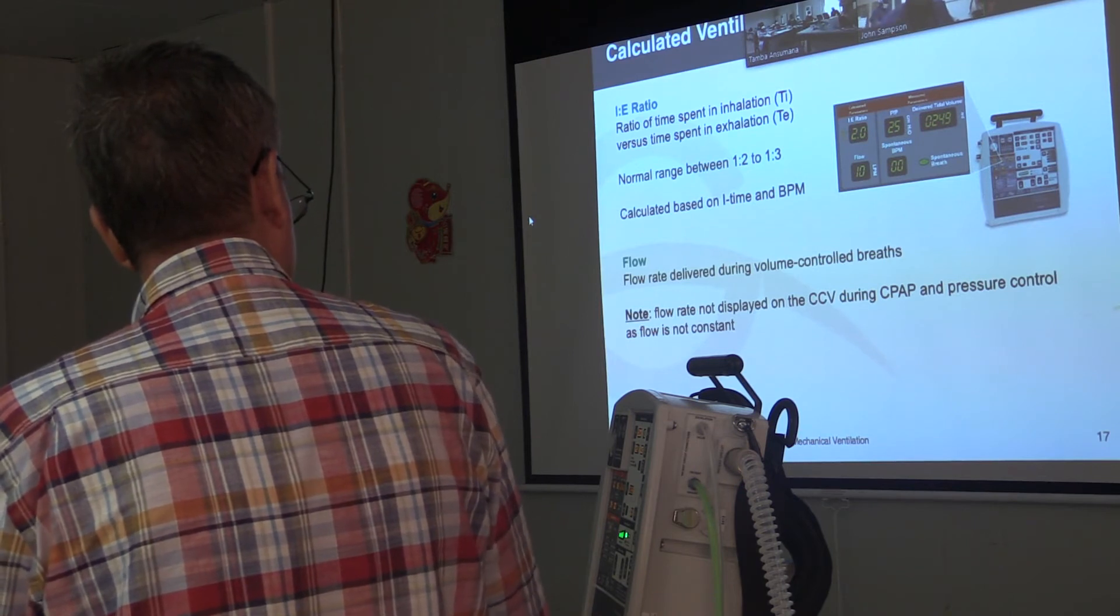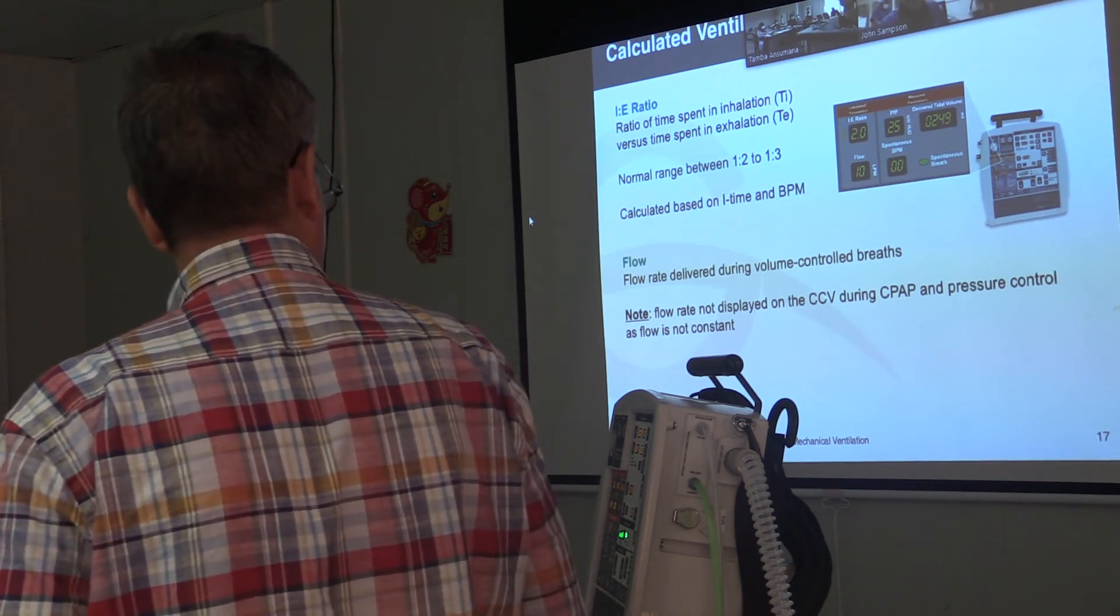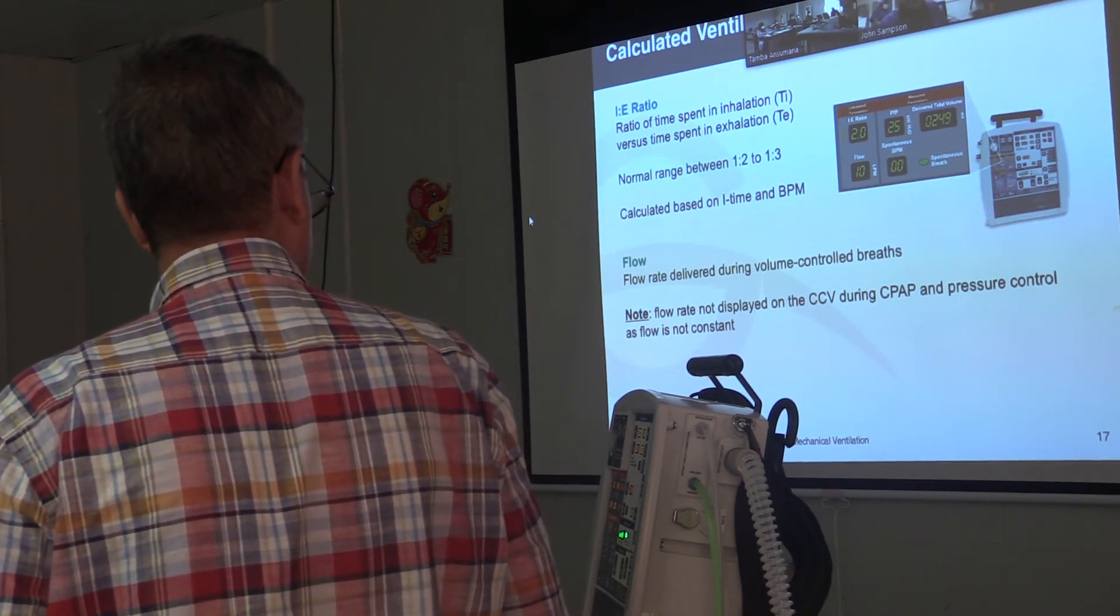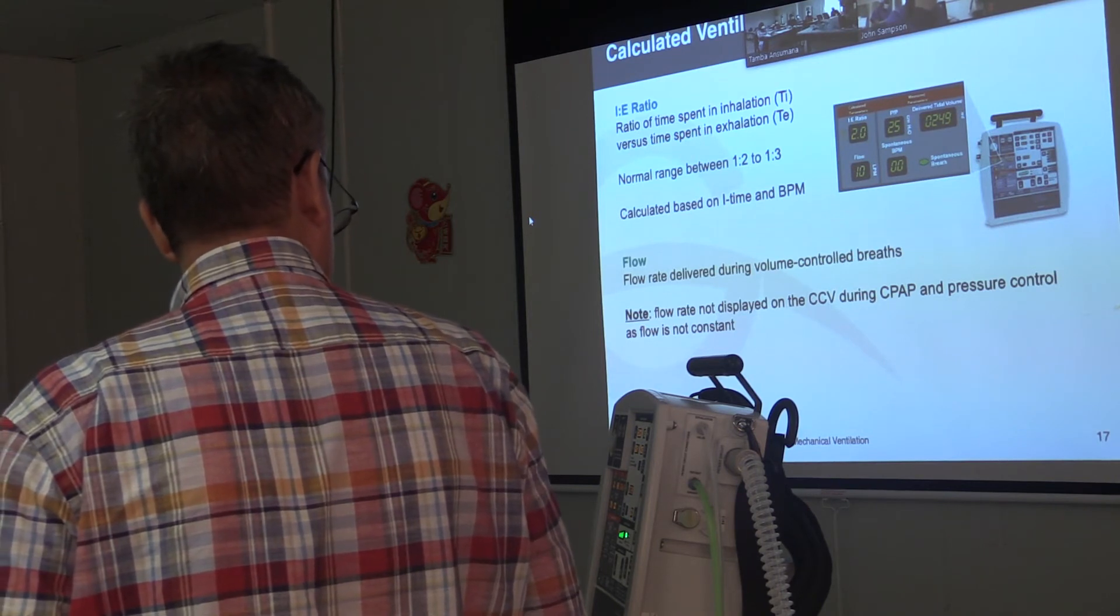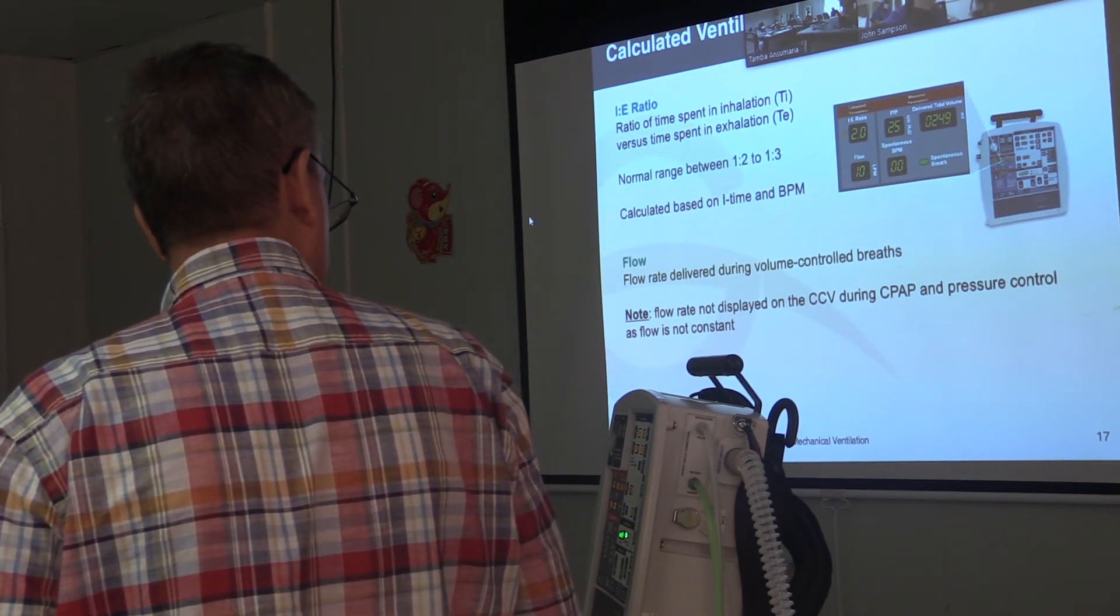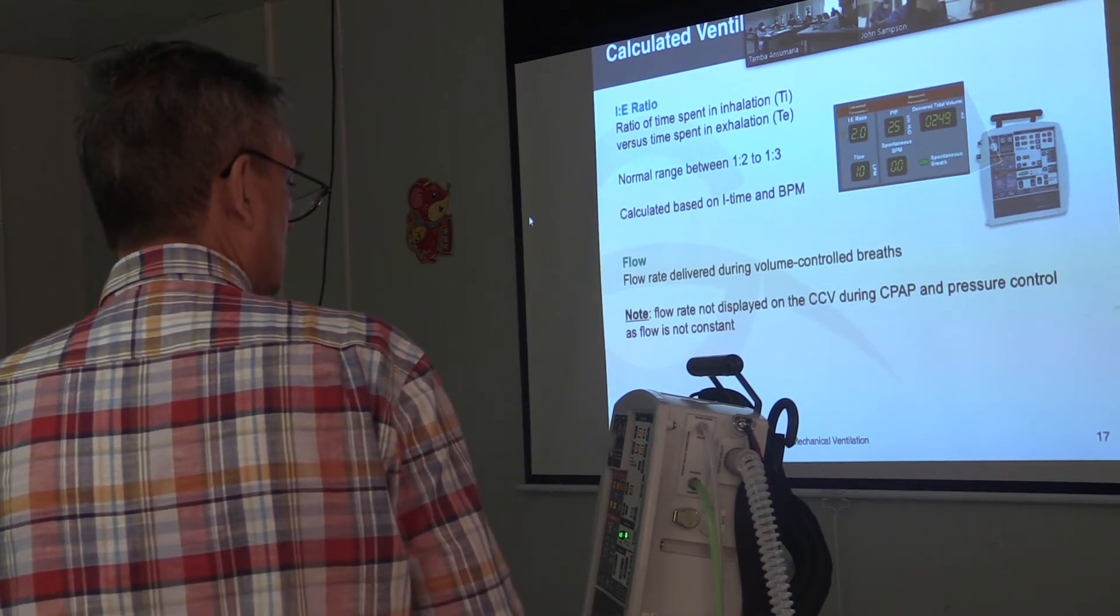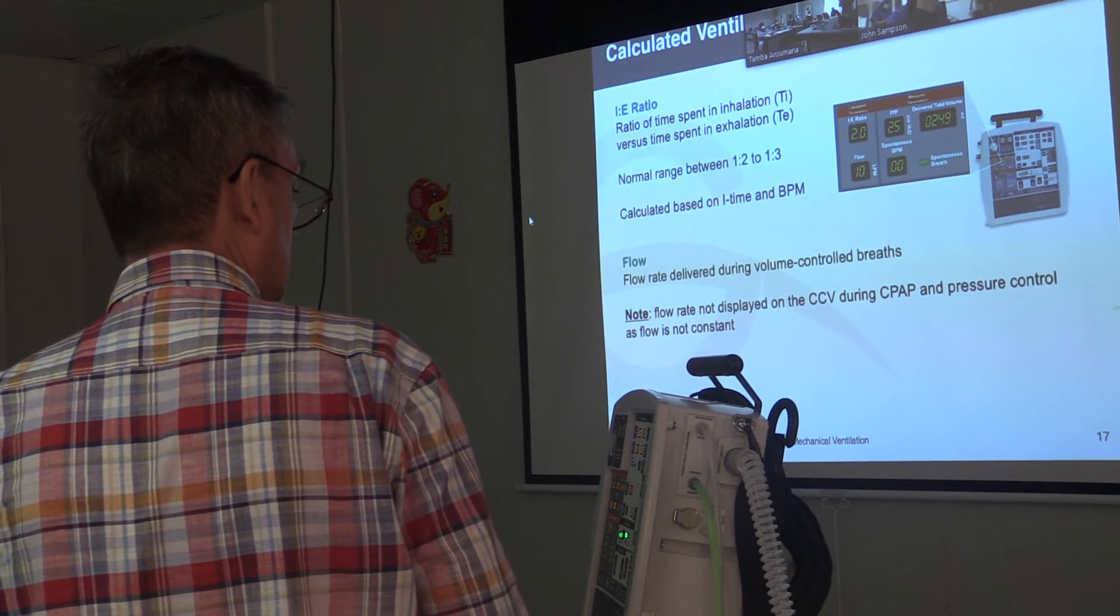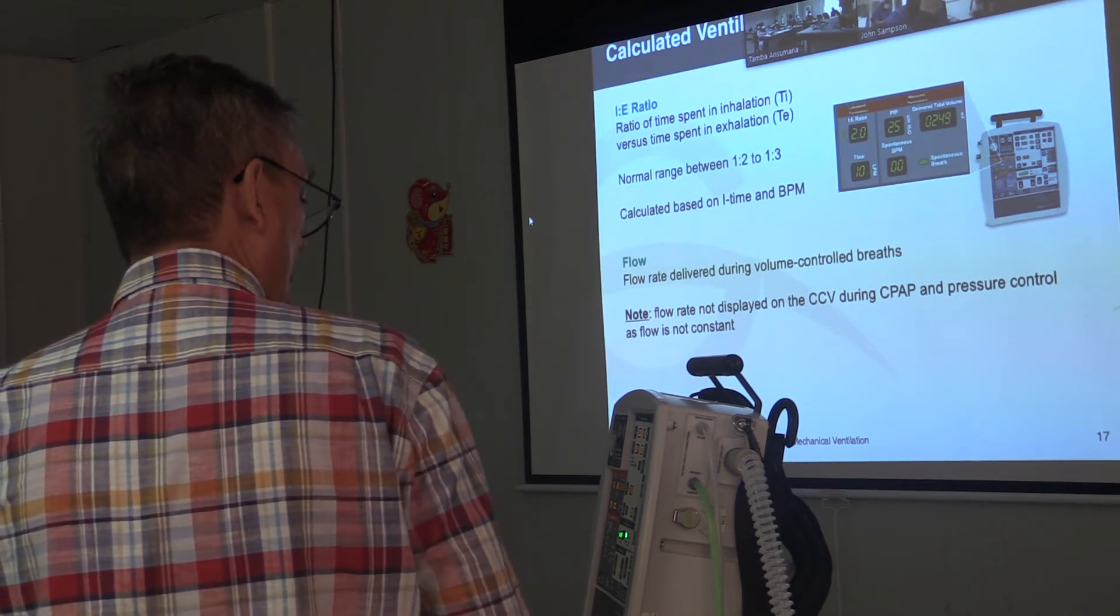Just one small note here is that the flow rate is not shown during pressure control breaths. That's just because the way that the ventilator delivers those breaths, it starts at a high flow, and then slowly decreases the flow as you get closer to the target PIP. So it's not calculated, and so it's not shown. So if you don't see it when you're ventilating in pressure control modes, that's okay, and that's why.